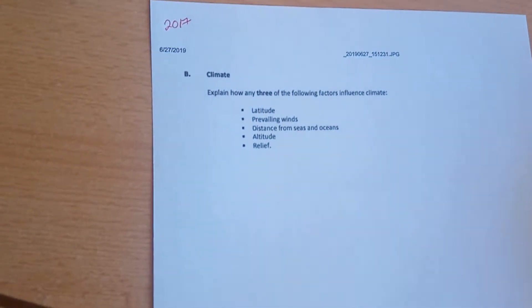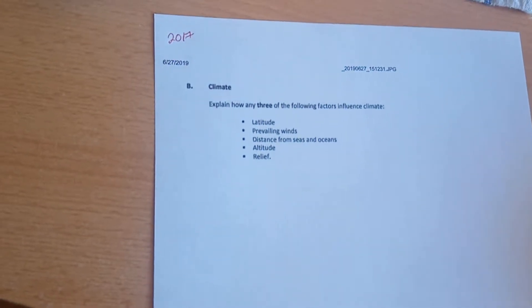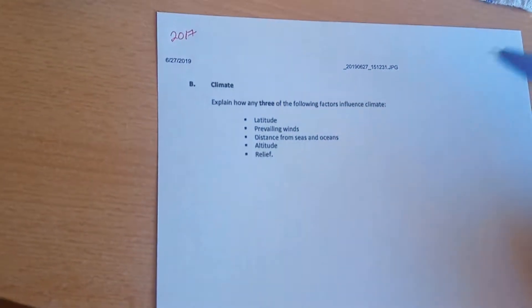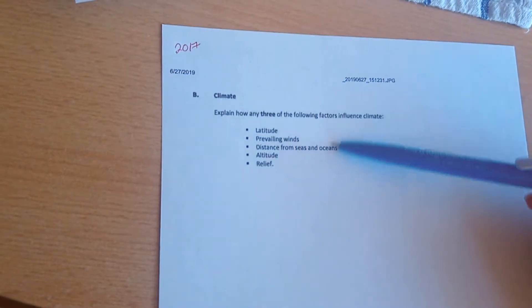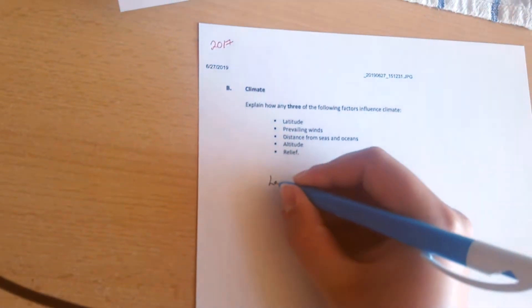Okay, so here we have a long question on climate from the 2017 Junior Cert Geography paper. The question is, explain how any three of the following factors influence climate. We're going to take first latitude.